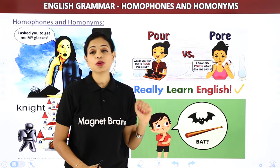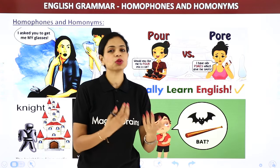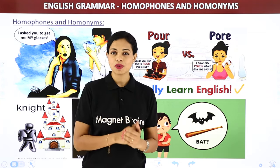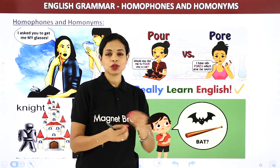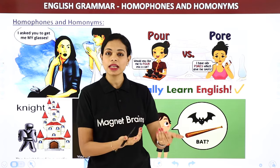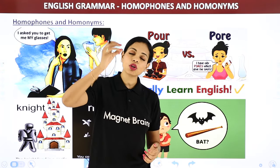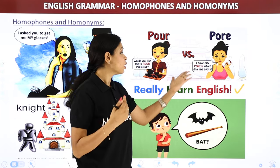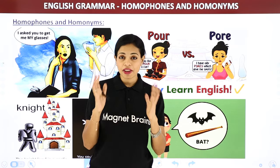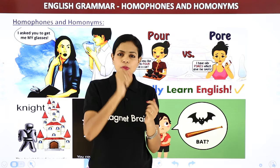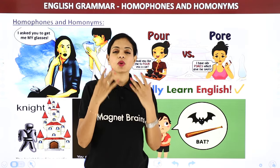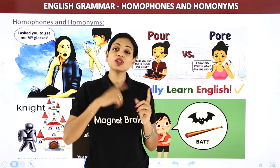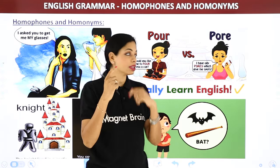She said 'would you like to pour me a cup?' — suppose she was drinking coffee, tea, or Coca-Cola. Pour means to pour any liquid. And then she said, 'I have oily pores which gives me spots.' Your face and body have small pores — little holes. So one is 'pour' and one is 'pores'.